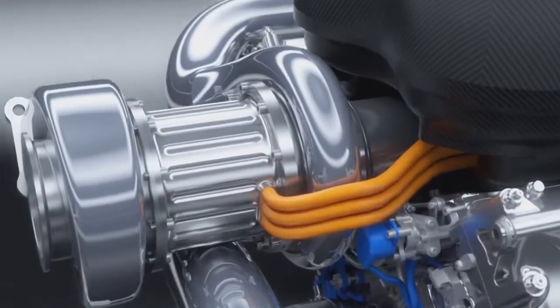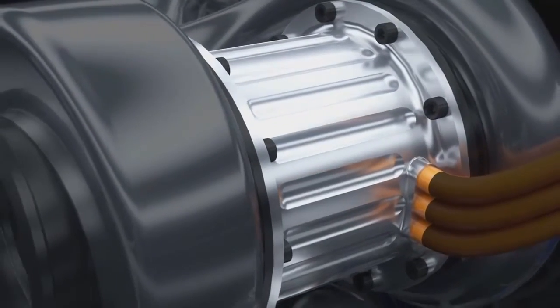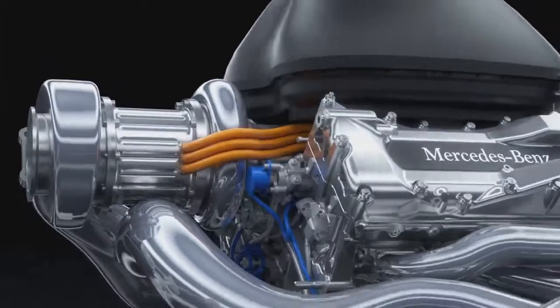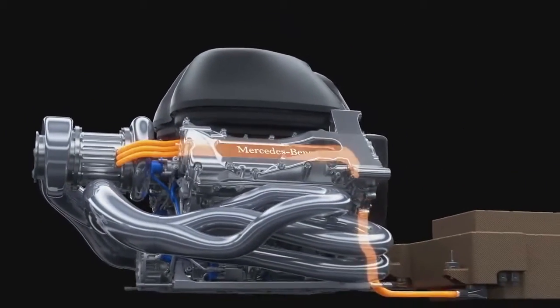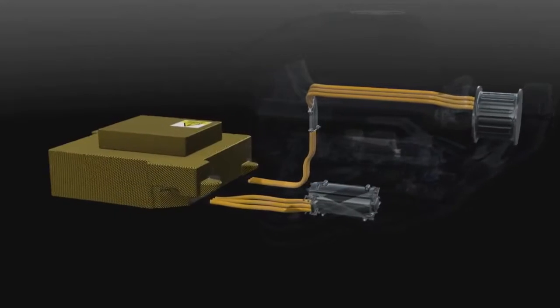The second motor generator unit, the MGU-H, harvests the turbo energy. As a motor, it spins up the compressor to eliminate turbo lag, but it can also send energy directly to the other electric machine and vice versa for maximum efficiency.